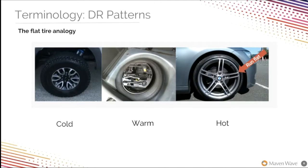However, if you have a spare tire and replacement kit, you can get back on the road using what you have, but you must stop your journey to make the repair. This relates to the warm DR pattern — backup and hardware are available at your site, so recovery times are shorter. But if you have run-flat tires, there is an immediate impact to your journey — your tires run well enough that you can continue without interruption. This relates to the hot DR pattern, where you have an active DR site and can fail over with no interruption.